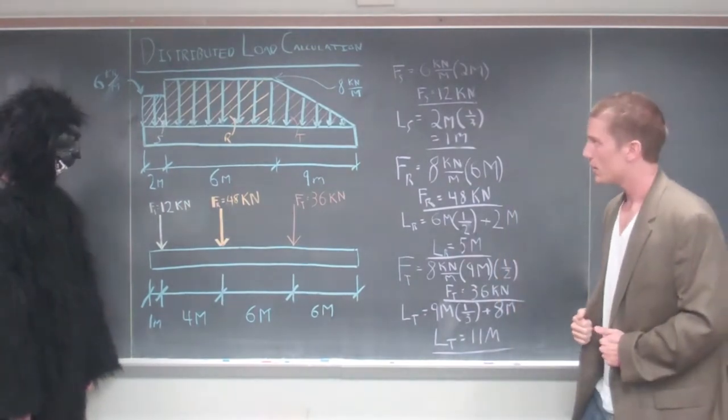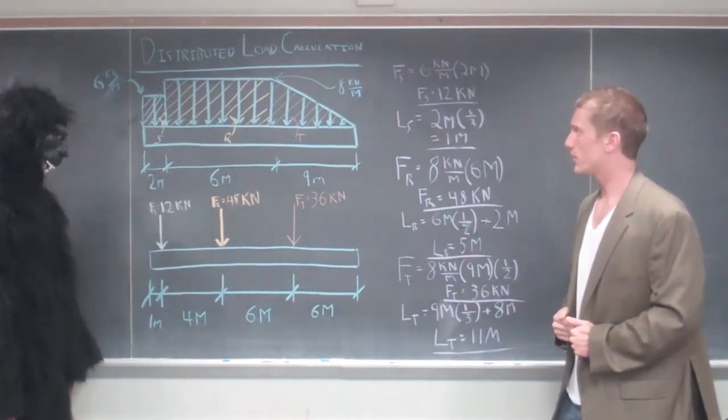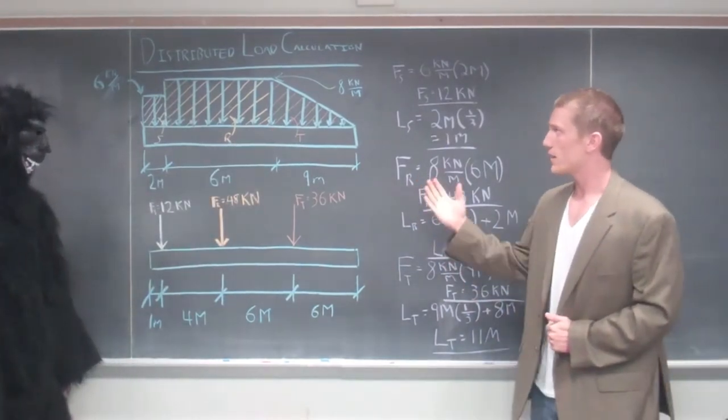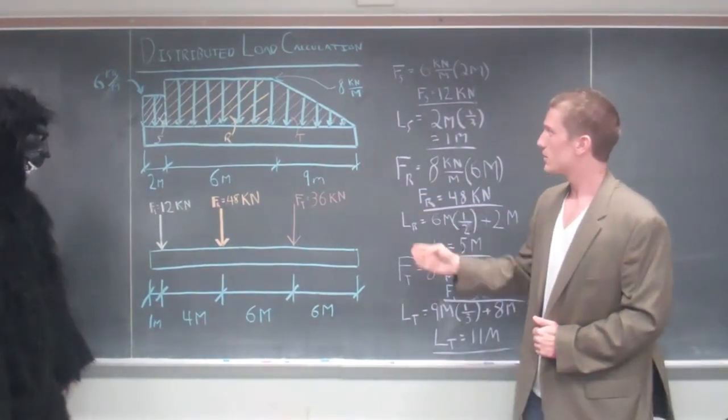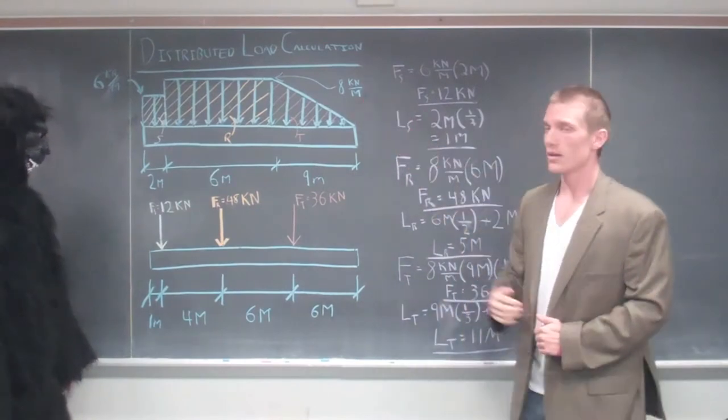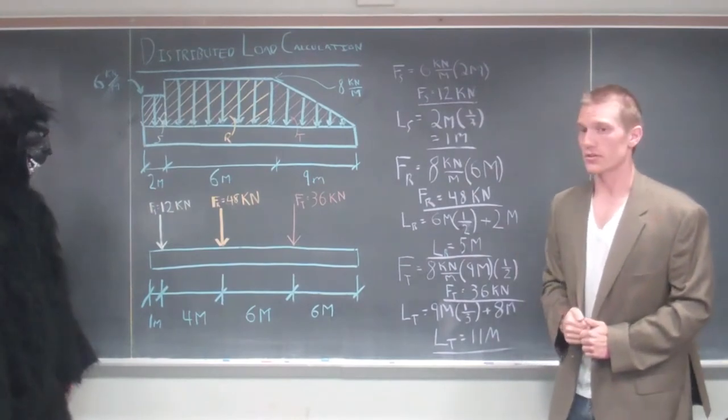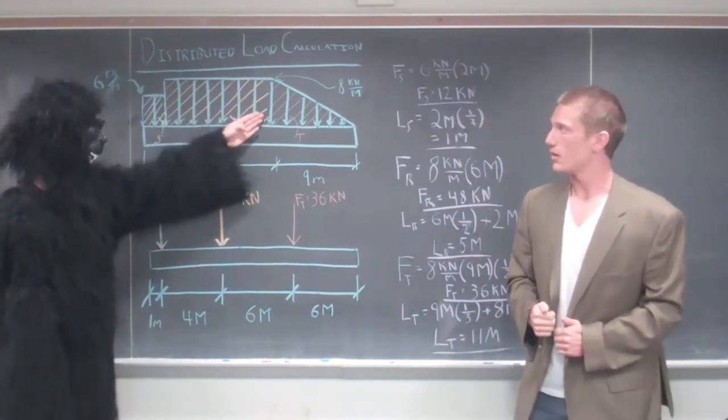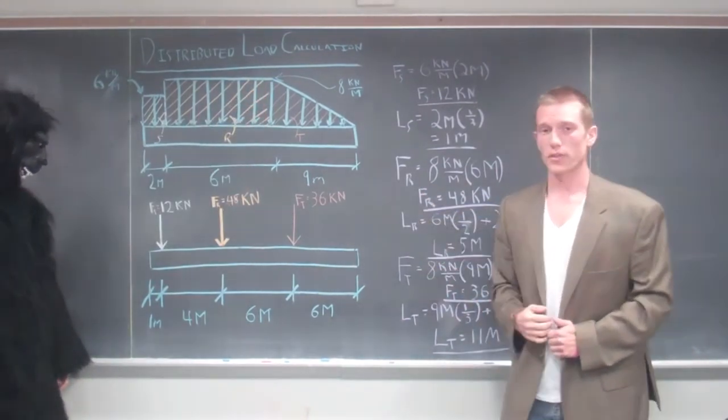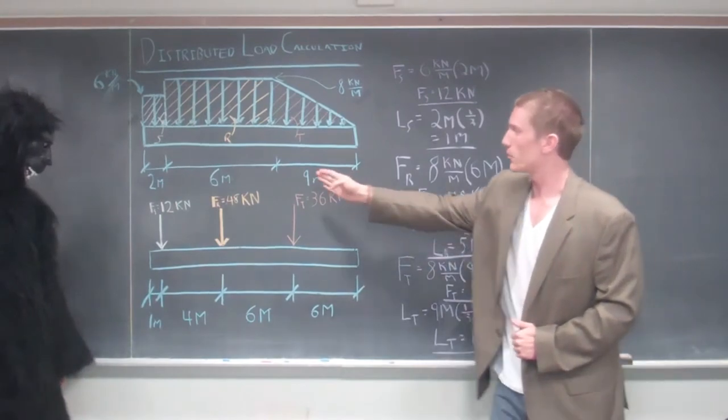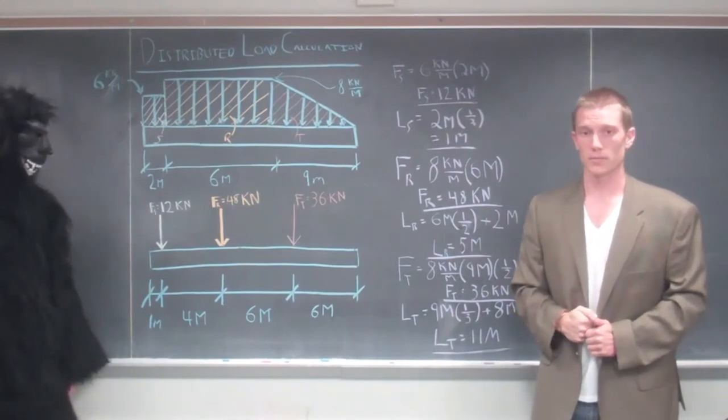The triangle is a little bit different for the distributive load. You calculate the area of that triangle, so you have the nine meters times the eight kilonewtons per meter, and then you divide that by two. To find the distance it goes, it is one-third of the distance away from the base. Since this is nine meters, one-third is three meters away from right here. You add that on to those two, so you have eight plus three, giving us eleven meters away from the left.